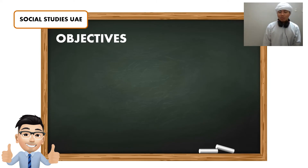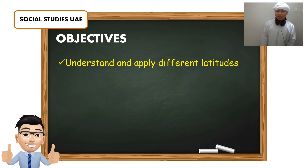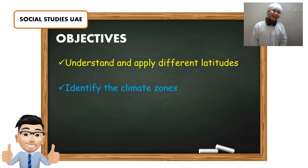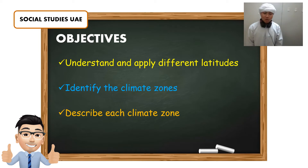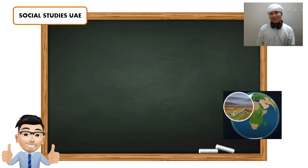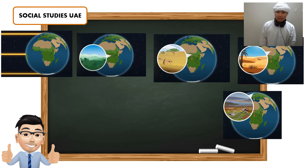Yesterday we talked about the different climate zones and you were able to understand and apply different latitudes. We were able to identify the climate zones and we were able to describe each climate zone. Let's get into it. We talked about the different climate zones and we all know the reason behind those climate zones is because of the sunlight that we get from the sun.